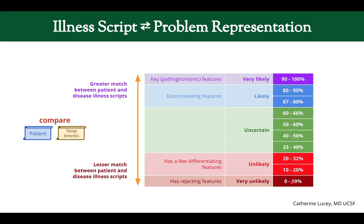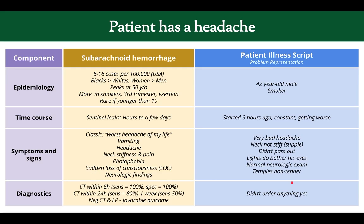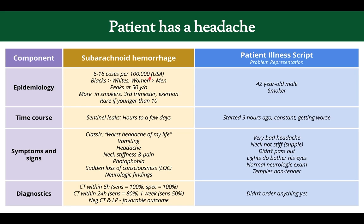Now let's look at the same patient and consider subarachnoid hemorrhage. Its incidence is 6 to 16 cases per hundred thousand — actually more common than temporal arteritis, which was 0.5 to 27 per hundred thousand.